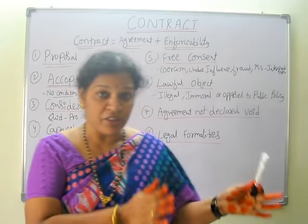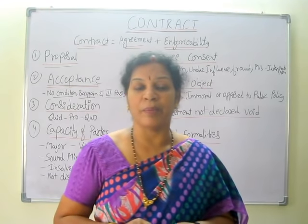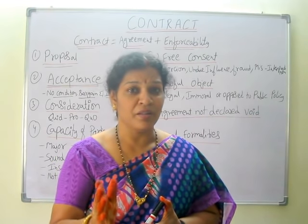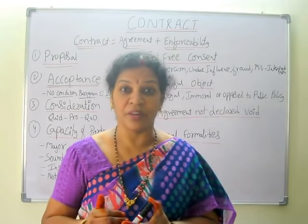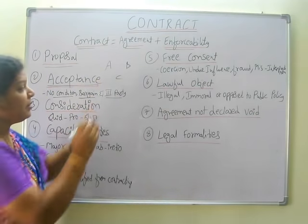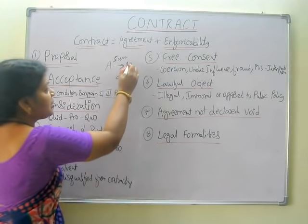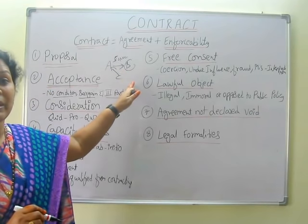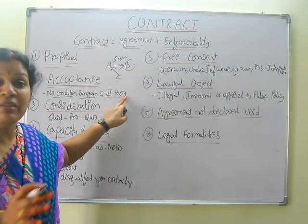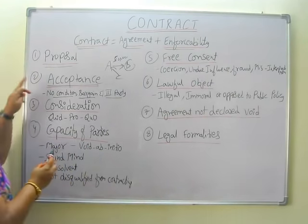The contract forms only between the first party and the second party. For example, A asked B for a loan of 50,000. B did not say anything, but C is ready to give the loan to A. That will not become a contract — the contract is between A and B only. C entering in between A and B means it will not become a contract. No third party; only two parties must be there. That is about acceptance.